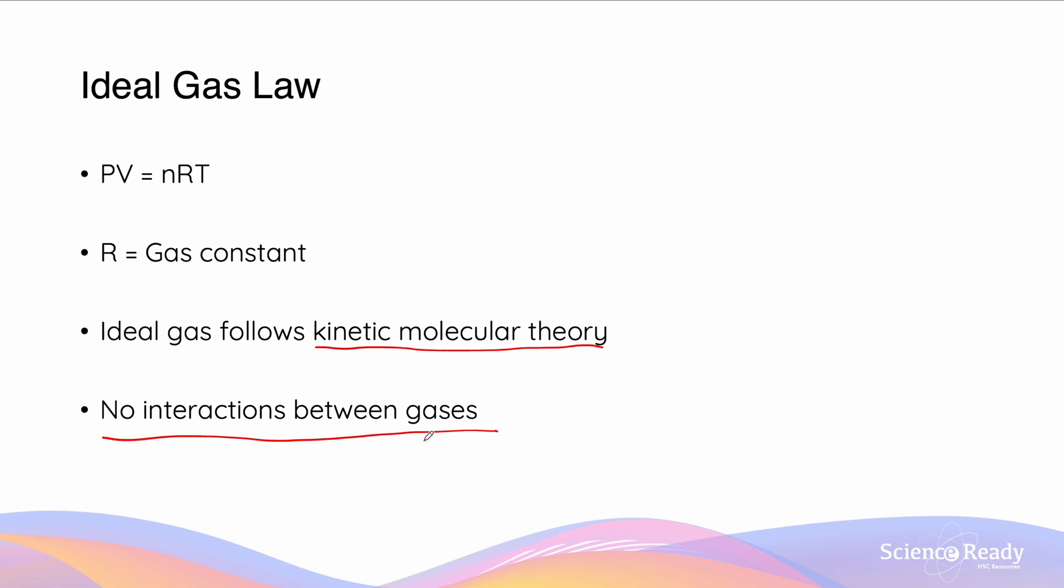So the ideal gas law provides us this relationship between pressure and volume, which is said to be equal to N, which is the volume, multiplied by R, which is the universal constant, the gas constant, and T, which is the temperature. This value for R you can find on your datasheet.